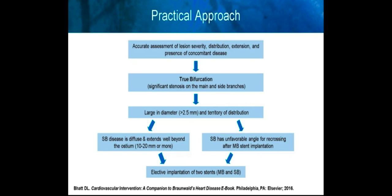This practical approach may be helpful in contemporary practice. After performing accurate assessment of lesion severity, distribution, extension, and the presence of concomitant disease, one should assess whether this is a true bifurcation — meaning significant stenosis in both the main and side branches — where there is diameter large enough and territory of distribution large enough to favor a two-stent approach. Features would include the side branch having diffuse disease extending well beyond the ostium for 10 to 20 millimeters or more, as well as an unfavorable angle for recrossing after main branch stent implantation. In these situations, elective implantation of two stents may be advisable.